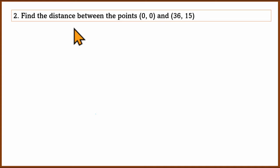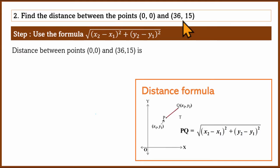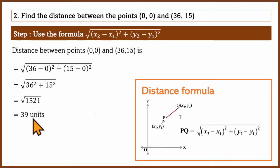Second question: find the distance between the points (0, 0) and (36, 15). Since one point is the origin, we substitute directly: square root of (36 minus 0) squared plus (15 minus 0) squared, which gives square root of 36 squared plus 15 squared, equals square root of 1296 plus 225, equals square root of 1521, which equals 39 units. So the distance between (0, 0) and (36, 15) is 39 units.